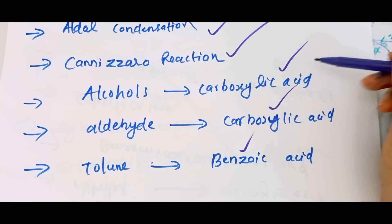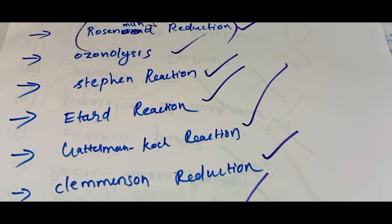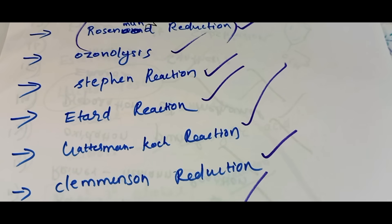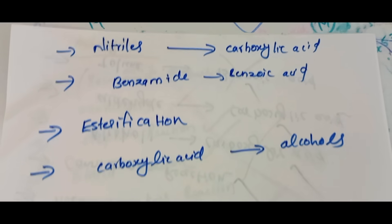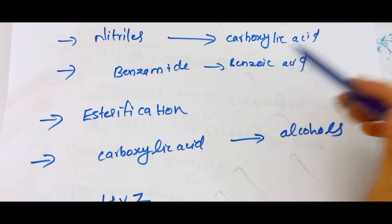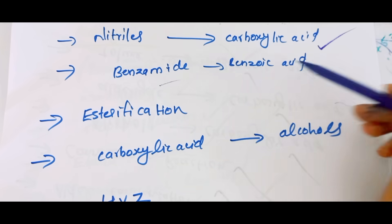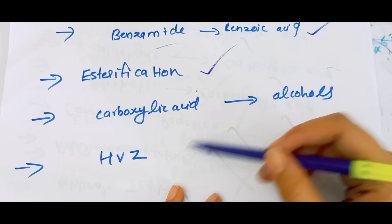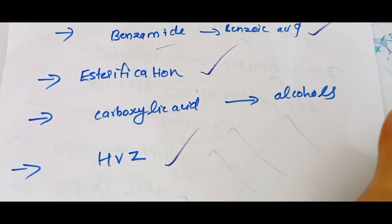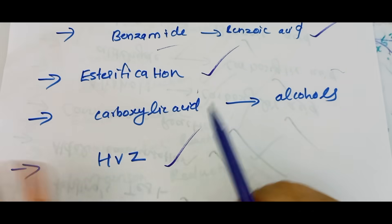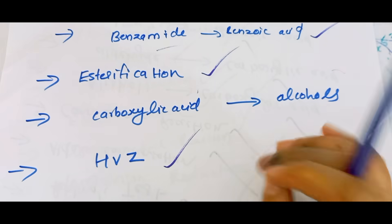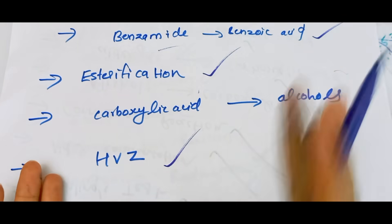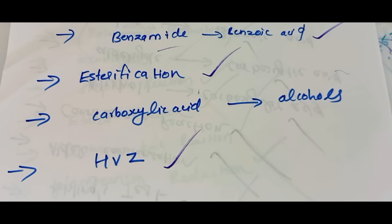Toluene to benzoic acid — this is the main item. Aldehyde to carboxylic acid, amide, benzoic acid, esterification, carboxylic acid. Hell-Volhard-Zelinsky reaction. This is the main item that we have to learn about it. Now we have to learn about it.